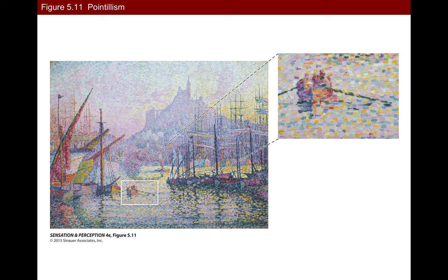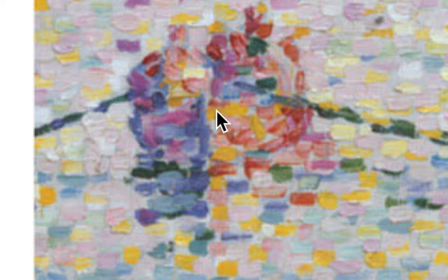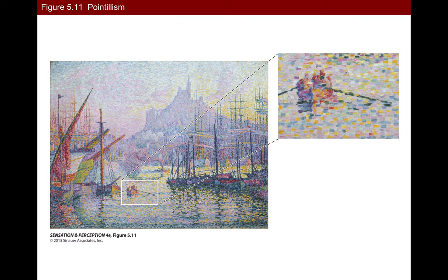Here's another example of additive color mixing: this pointillist painting of a harbor scene. Down on the boat, it kind of looks orange. But if you zoom in, there isn't much orange there — there's some golden yellow, some red, some pink. When you stand far away it looks like an orange reflection on the boat. This is additive color mixing because when you're far enough away, those little patches of color combine together since they're too small to see individually at a distance.